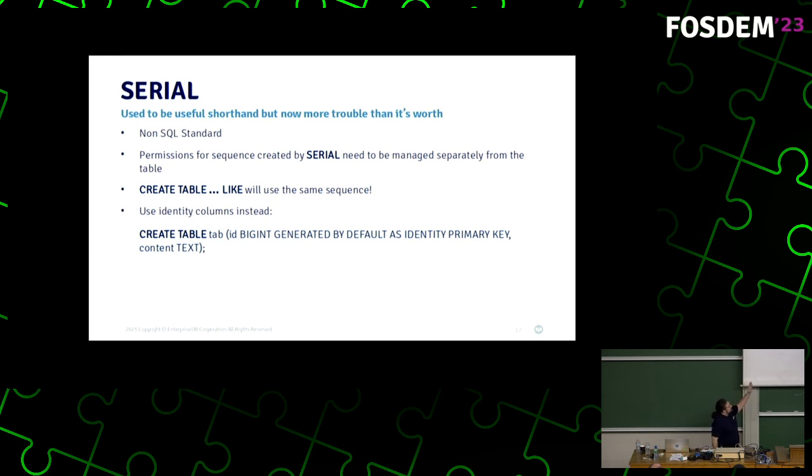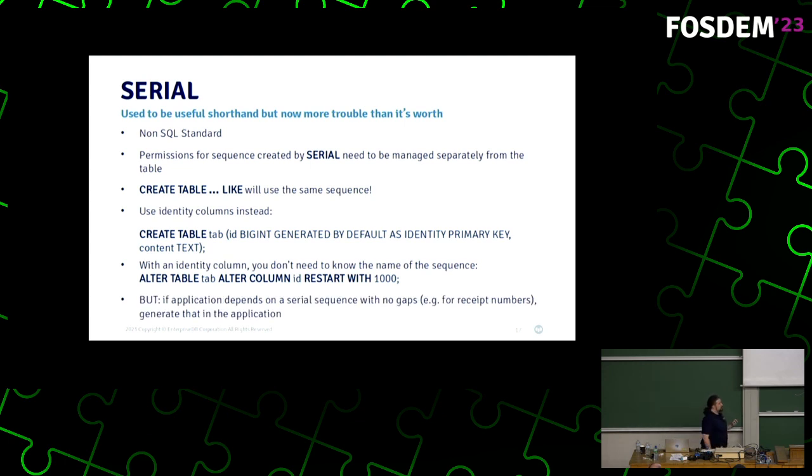With an identity column, you don't need to know the name of the sequence. So when you alterTableTab, alterColumnID, restart 1000, you don't need to know what the sequence is called. It's attached to the table. So it will just restart the sequence from 1000. A side note here. If your application is depending on a Serial sequence to generate things like receipt IDs, receipt numbers, that is something you should generally generate in your application to make sure that there are no gaps. Because there's no guarantees whatsoever that a sequence in Postgres will have no gaps, right? If you try to insert something and there's an error and you're all back, you've skipped over that sequence number. It never goes back. Cool. So now let's look at improper usage of Postgres features.